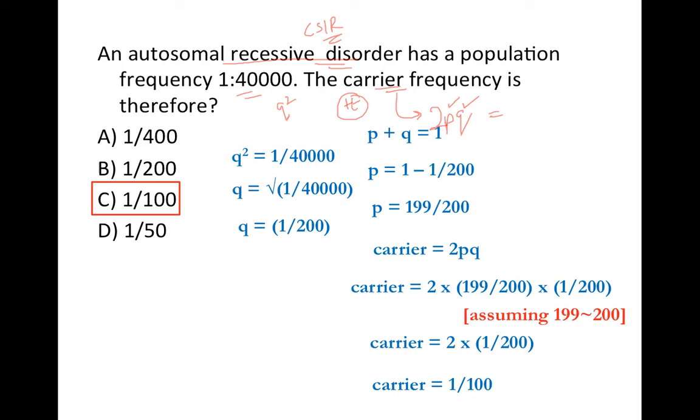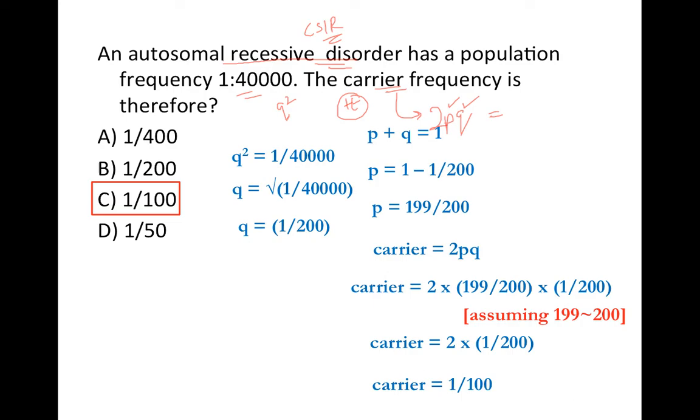I hope you have enjoyed this as well as you have understood Hardy-Weinberg equilibrium and its concept. There are some assumptions also with the Hardy-Weinberg. As I already mentioned, the population size should be infinitely large, because large population produces large sample sizes, and the success of gametes would be high. There should be no mutation, there should be no migration from the population, and there should be no natural selection. What is natural selection? That an individual has a reproductive advantage over another individual. So this should not happen. No individual should have reproductive advantage over another individual because of its genotype.